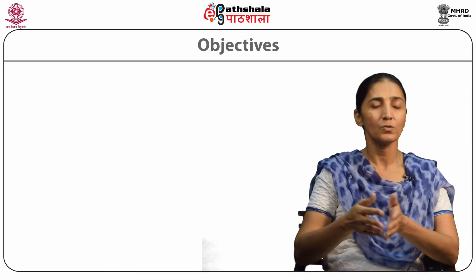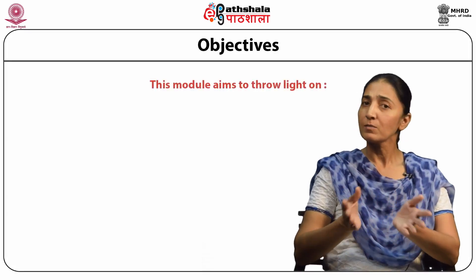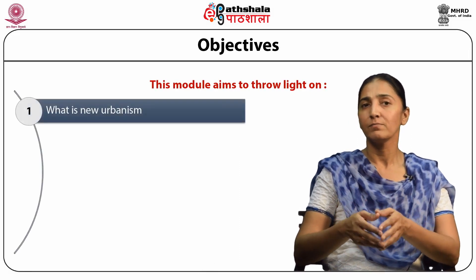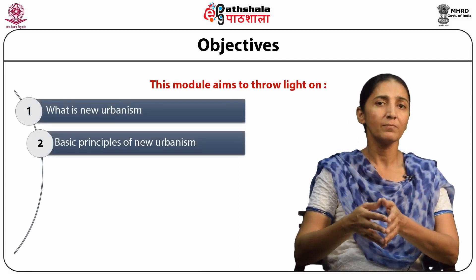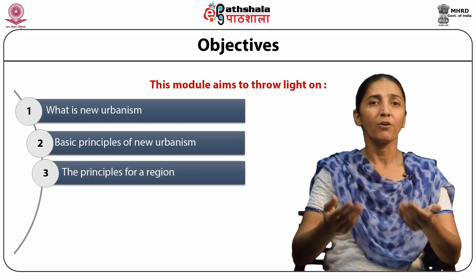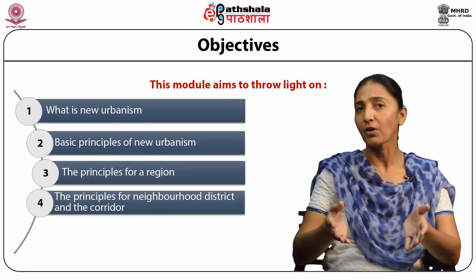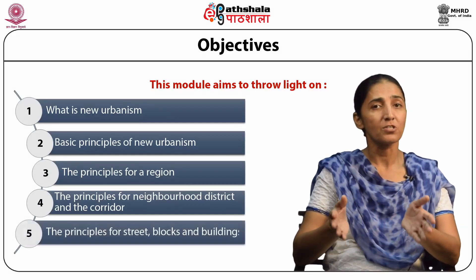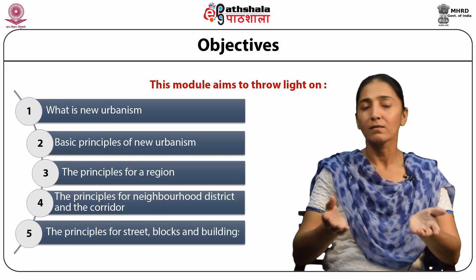These concerns of urban planners have led to the idea of new urbanism, which idolizes the city to be a walkable, livable, and pollution-free place. In this perspective, this module aims to throw light on what is new urbanism, what are its basic principles, the principles for a region, the principles for a neighborhood, district and corridor, and the principles for streets, blocks, and buildings.